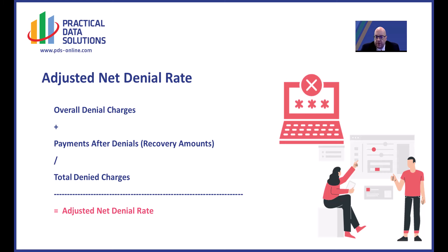One of the ways we want to look at with this adjusted net denial rate is: what is the impact of denial recoveries? How well are we doing in our appeal process, our appeal efficiencies, and how much money are we getting back? This is going to show the true financial impact — how much money we truly are losing from the impact of denials.